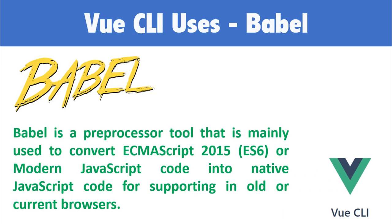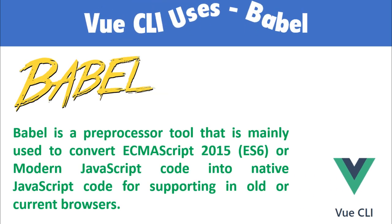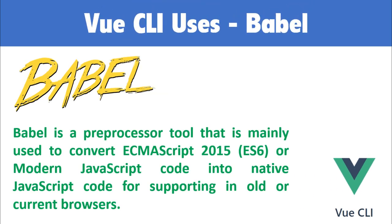Vue CLI uses Babel. Now what is Babel? Babel is a preprocessor tool that is mainly used to convert ECMAScript 2015, that is ES6 or modern JavaScript code, into native JavaScript code for supporting old or current browsers.